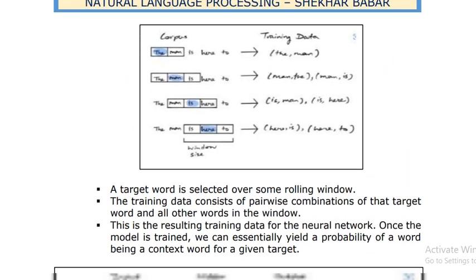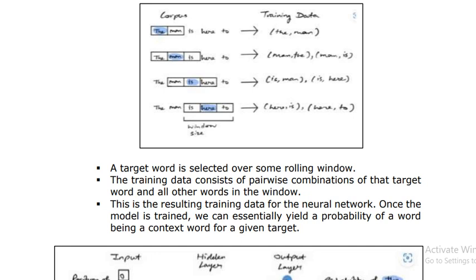In the diagram, we are taking a corpus and considering the training data — for example, 'the man' — and predicting the surrounding words. Likewise, we train the model and predict the words around it, which is basically how the Skip-gram model works. The target word is selected over a rolling window, and the training data consists of pairwise combinations of the target word and all other words in the window.